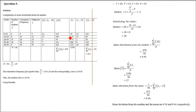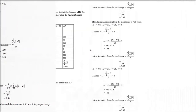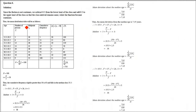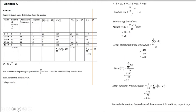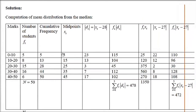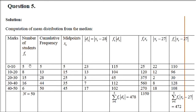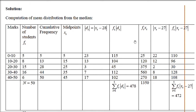Question 5 requires finding mean deviation from both the mean and the median of the same distribution. Both skills must be applied here, so first we find the median, then the mean, and then compute mean deviation in both cases.